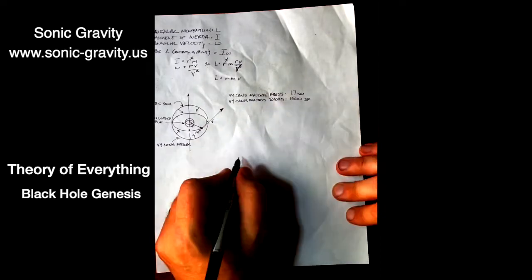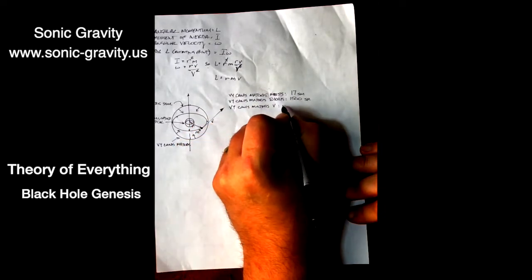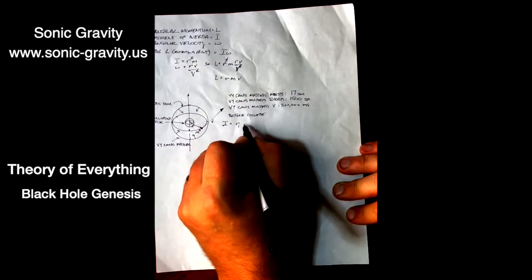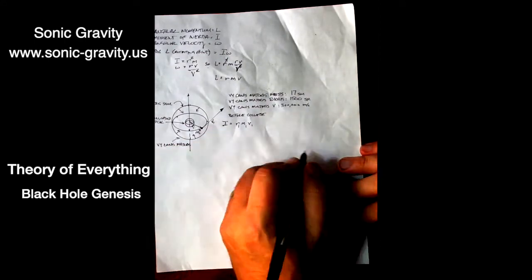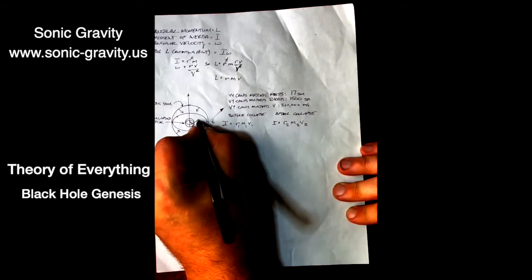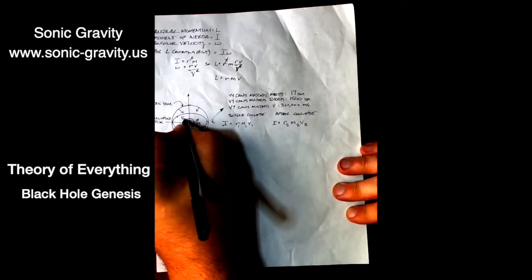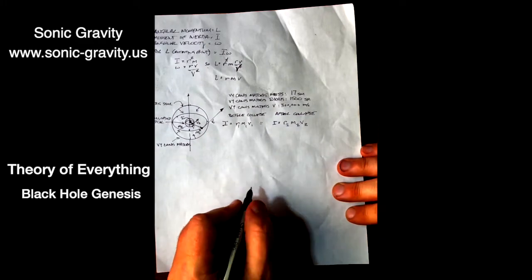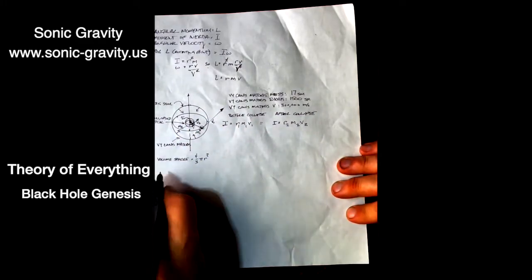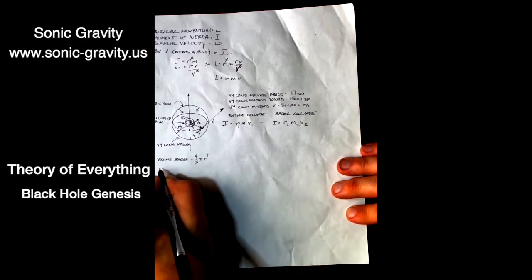That's given as mass times the tangential velocity times the radius. The radius changes from something really big to something really small. The mass condenses as a function of volume of a sphere. The equation for the volume of a sphere is 4/3 π r³. So the mass density per unit volume of the condensed star is the mass density of the original star times the big radius cubed divided by the little radius cubed.